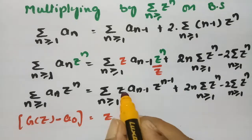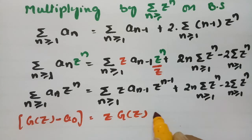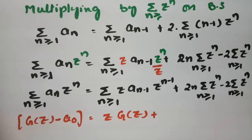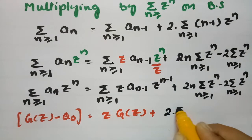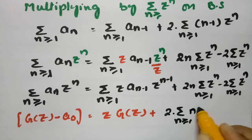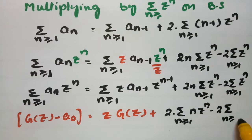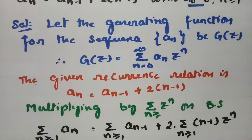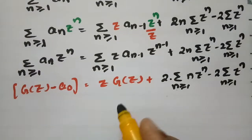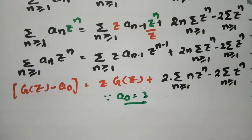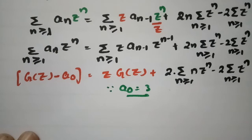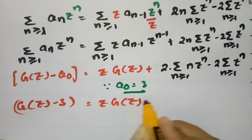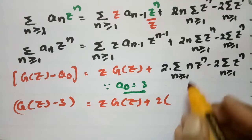Since a₀ = 3, substituting gives G(z) − 3 = z · G(z) + 2 times the series expansion: 1·z + 2·z² + 3·z³ + ... minus 2 times z + z² + z³ + ...